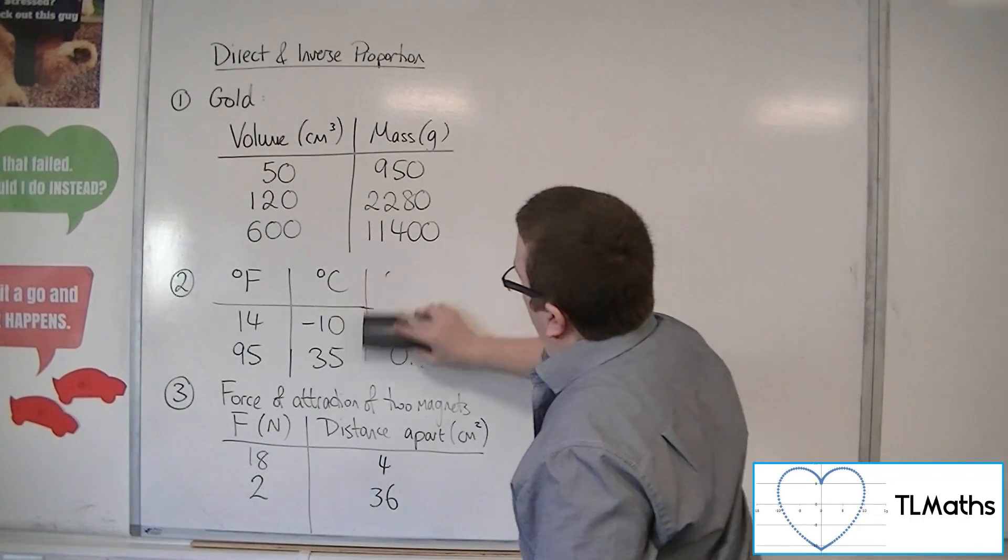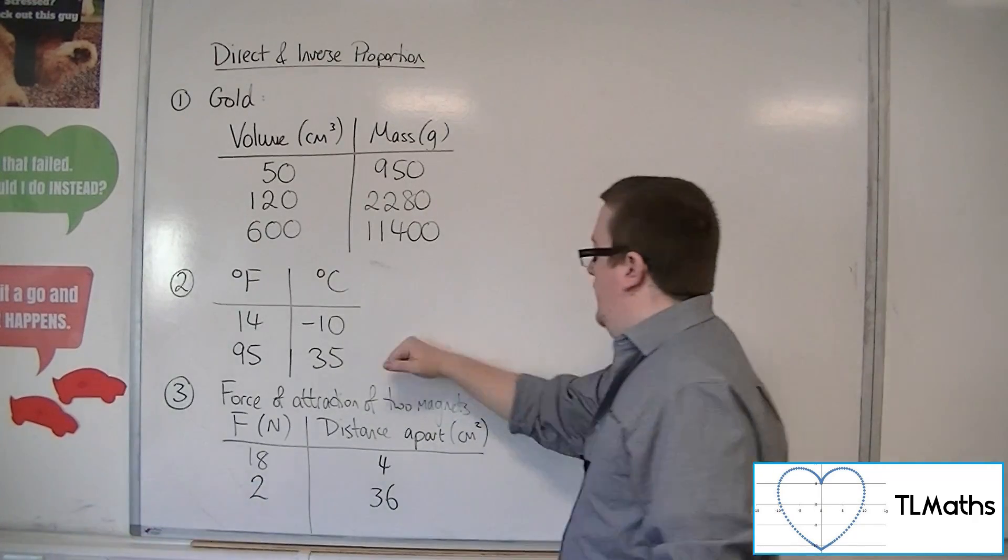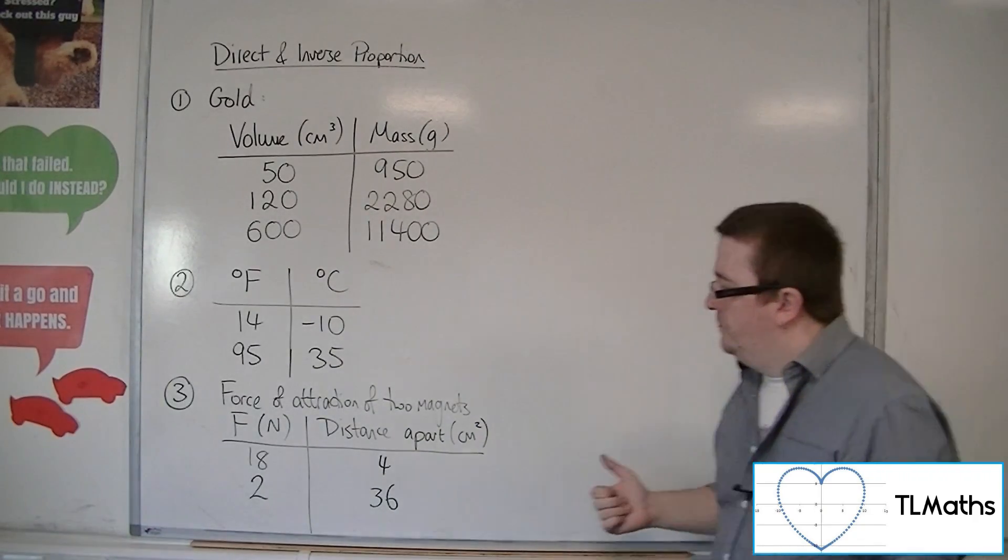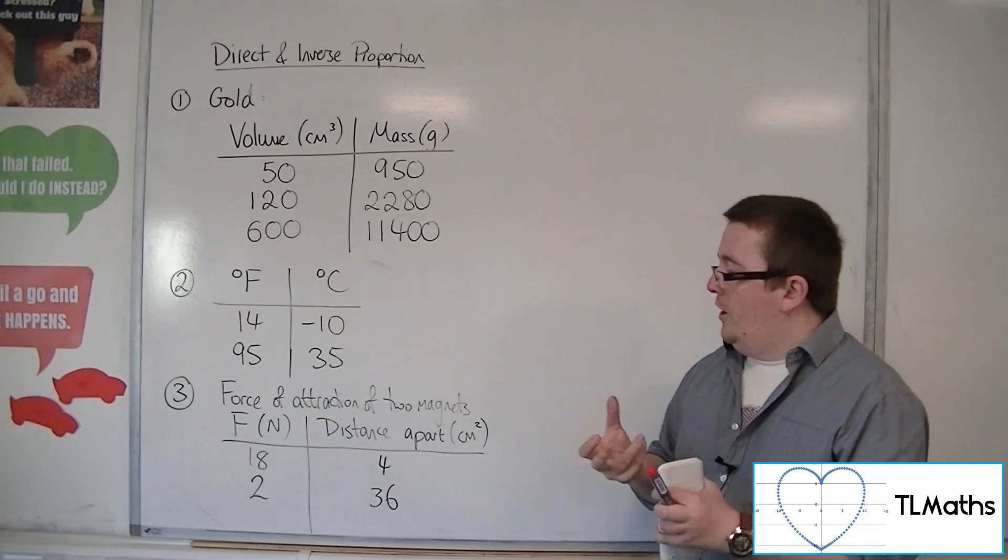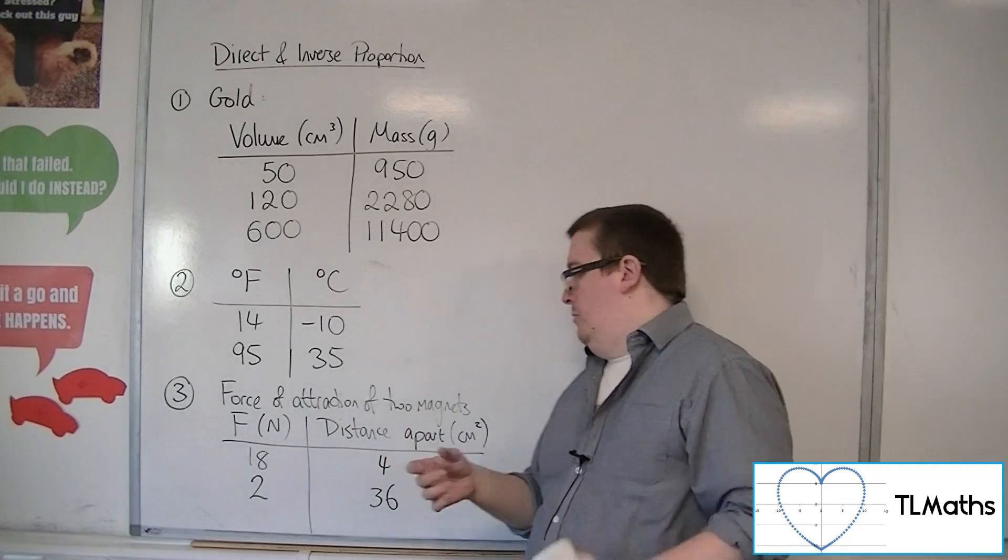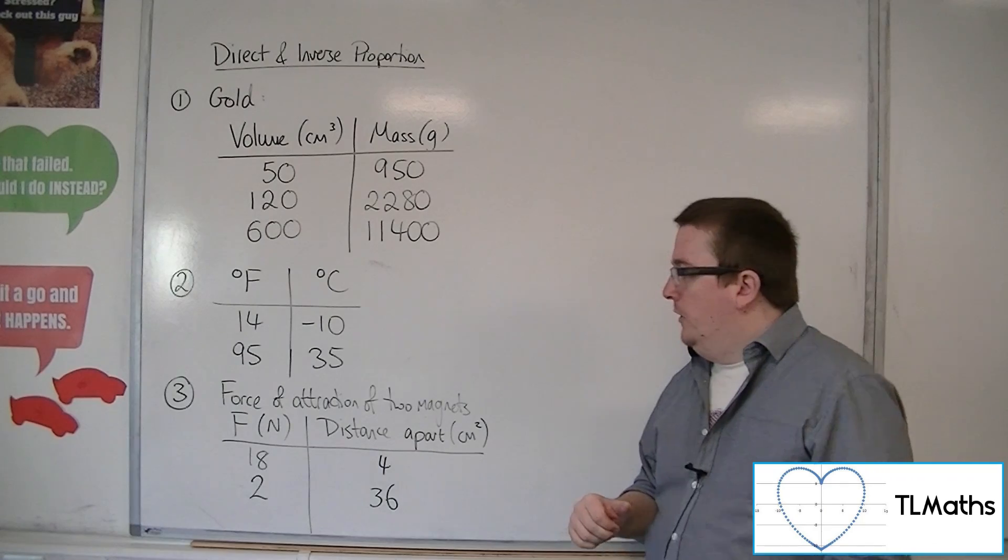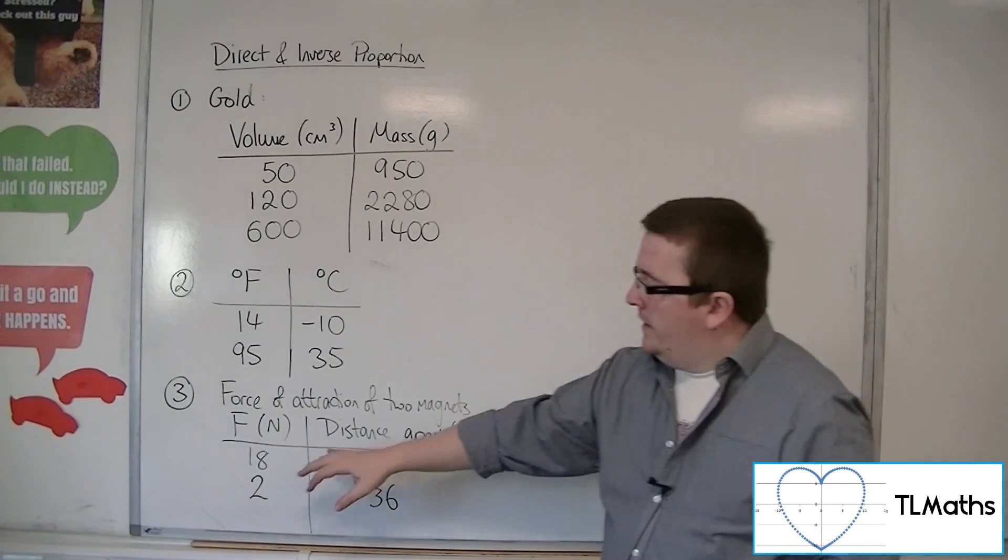So if we have a look at this last one, what we have here is the force of attraction of two magnets is actually inversely proportional to the square of the distance apart.